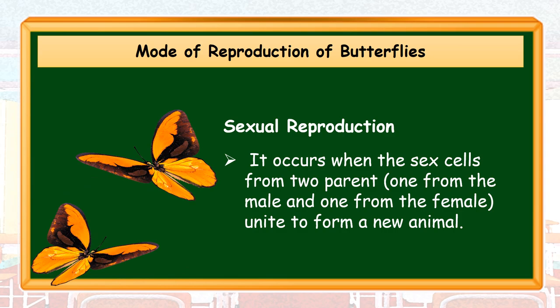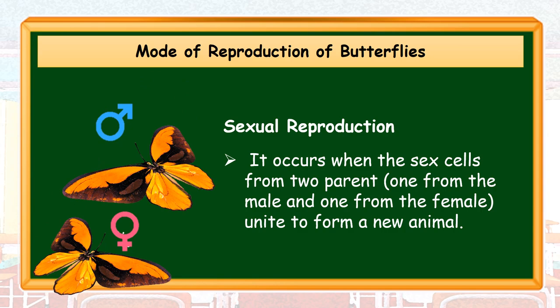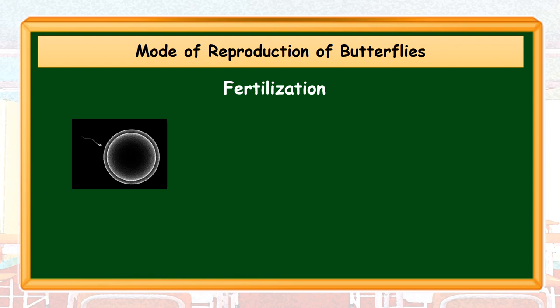Butterflies reproduce their own kind by having a partner to mate with. The mode of reproduction is called sexual reproduction. It occurs when sex cells from two parents — one from the male and one from the female — unite to form a new animal.